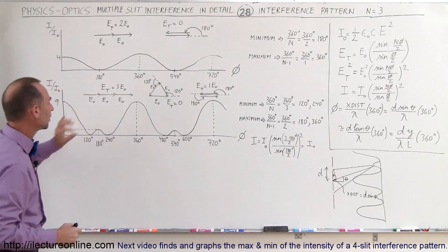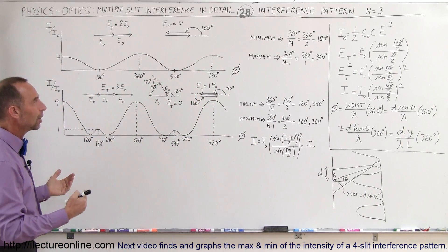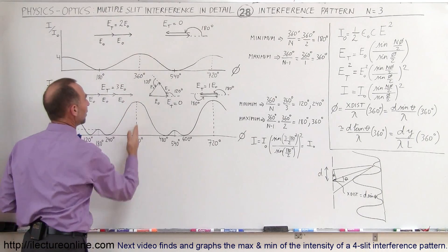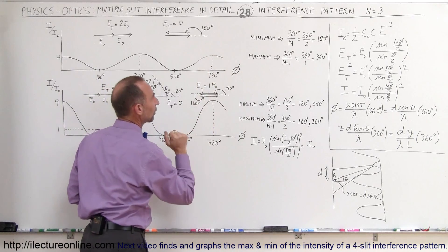That will be the partial maximum right there. And that's how a phase diagram looks like when we have three slits. Notice that they're lined up the same as the two-slit situation right there.